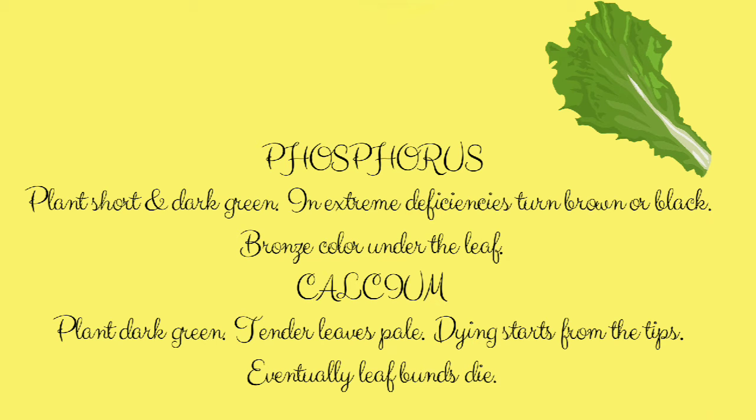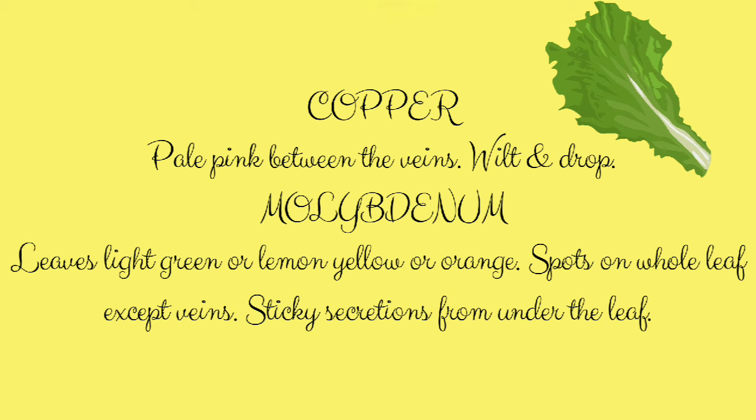In case of copper deficiency, a pale pink color will develop in between the veins, and later the leaves will wilt and drop.